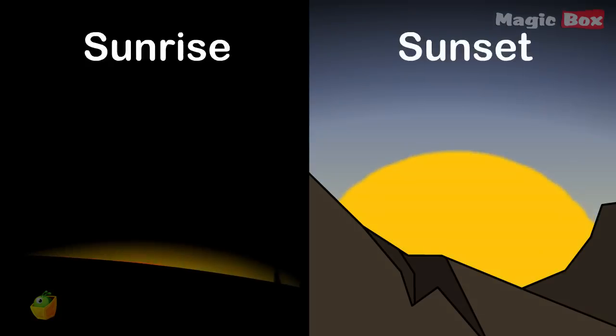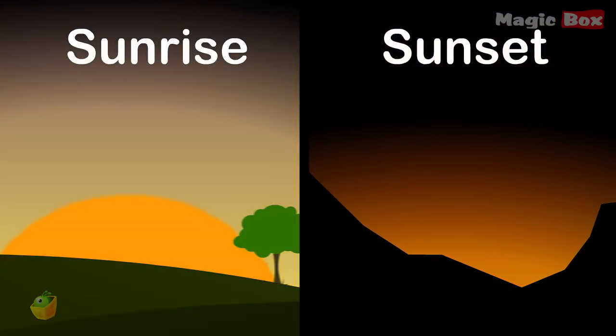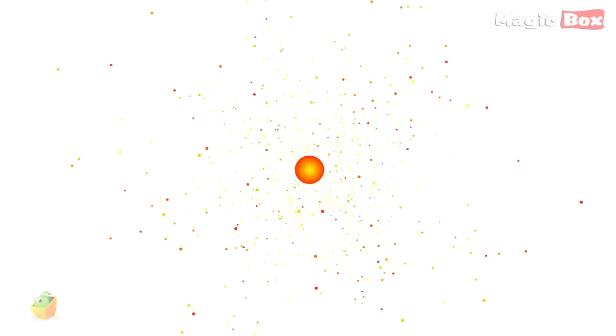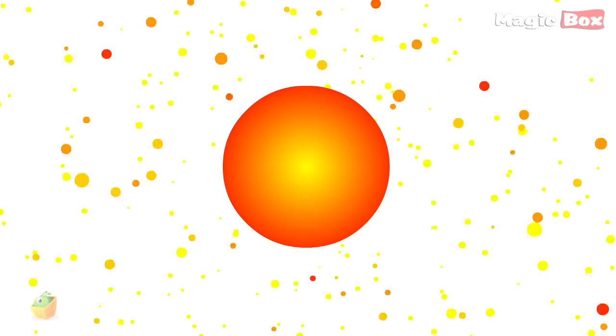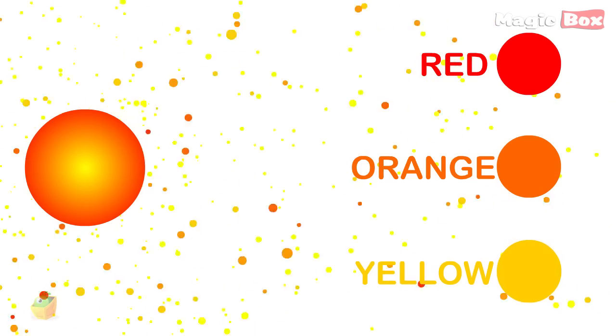During sunrise and sunset, the light traveling through the atmosphere is longer at the horizon. If you look up high in the sky, there are more dust particles at the horizon, which is why you see such pretty colors like red, oranges, and yellows.